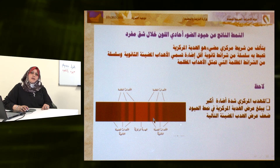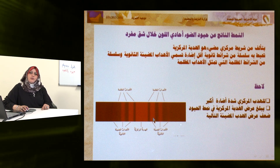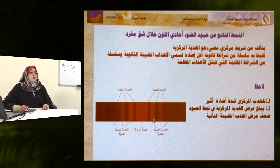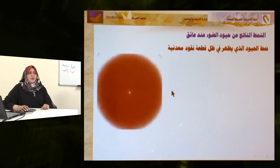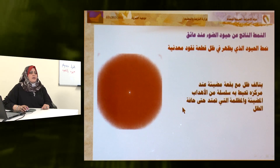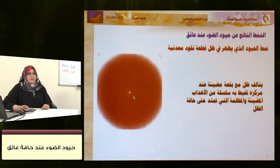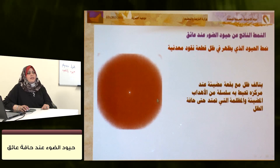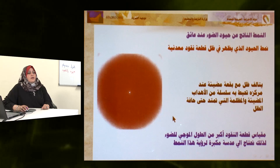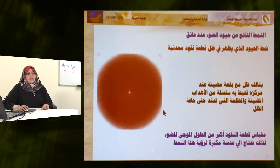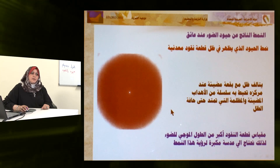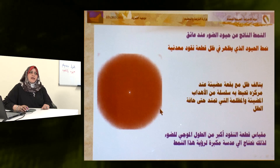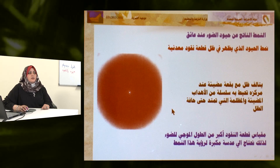النمط الناتج عن حيود الضوء عند عائق: مثلاً عند وضع قطعة نقود معدنية، يظهر نمط الحيود كظل مع بقعة مضيئة في الوسط تحيط بها سلسلة من الأهداب المضيئة والمظلمة تمتد حتى حافة الظل. قد يكون هذا النمط غير واضح لأن حجم قطعة النقود أكبر بكثير من الطول الموجي للضوء، لذلك نحتاج إلى عدسة مكبرة.